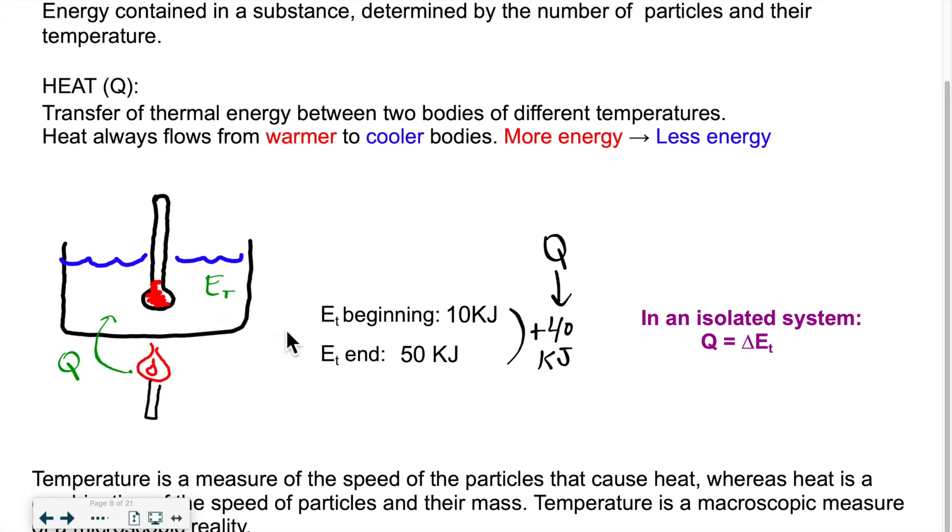As opposed to thermal energy, that's the energy that the water already possessed. Now, we can measure the before and after. At the beginning, the water had a certain amount of thermal energy, let's say 10 kilojoules. And at the end, it has 50 kilojoules. So how much heat was transferred to it? Well, 40 kilojoules. 50 minus 10 gives me 40. So internal energy and energy transferred. That's the distinction between the two, but both are forms of energy.